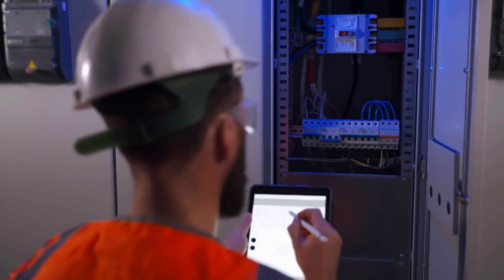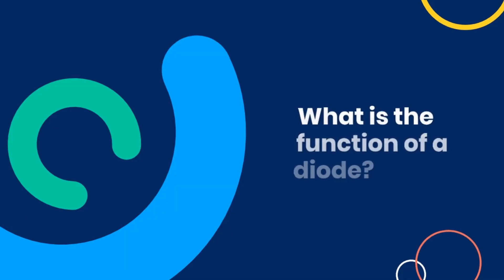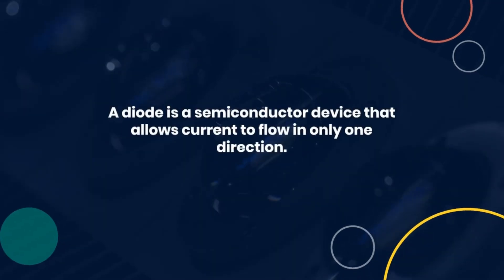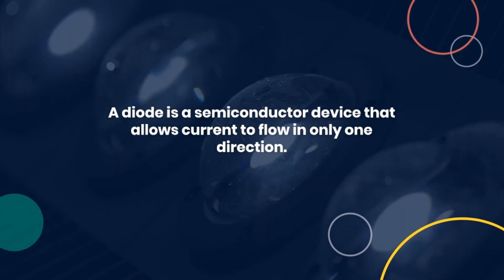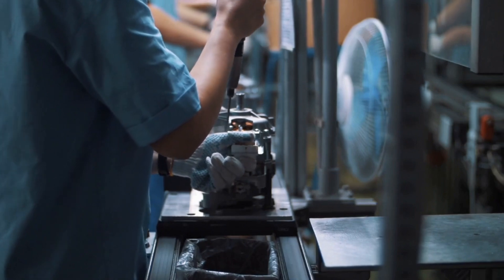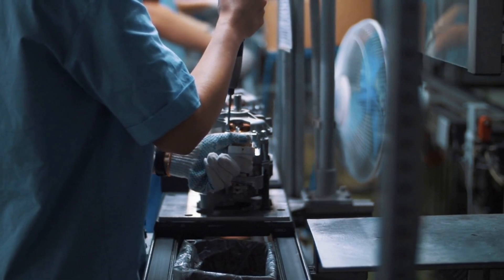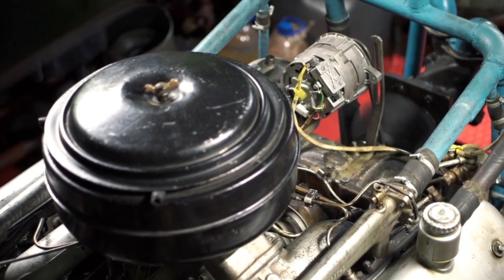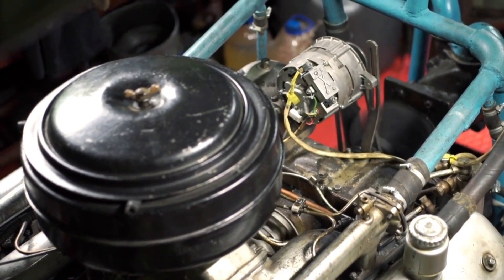Question eleven: What is the function of a diode? A diode is a semiconductor device that allows current to flow in only one direction. It is used for rectification, voltage regulation, and signal modulation in electronic circuits. Diodes are essential for controlling the direction of current flow and protecting circuits from reverse polarity.